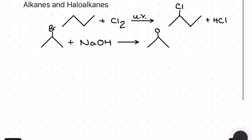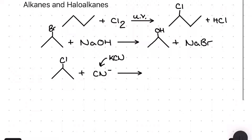For the second reaction I'm taking a haloalkane and reacting it with sodium hydroxide to make an alcohol and a sodium halide. This reaction has a nucleophilic substitution mechanism, as does the third reaction: taking a haloalkane and reacting it with KCN in the presence of ethanol, because it provides the cyanide ion CN⁻, to produce a nitrile.